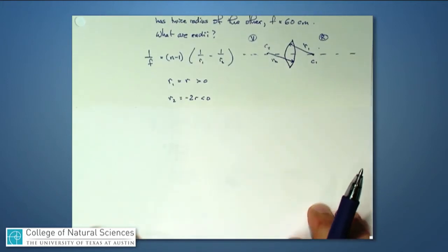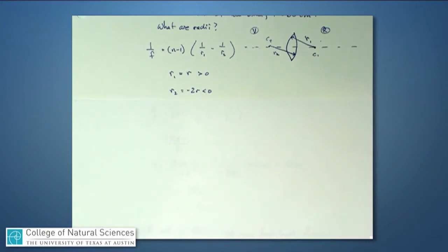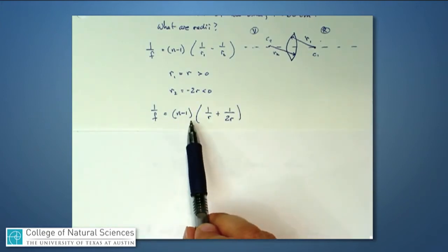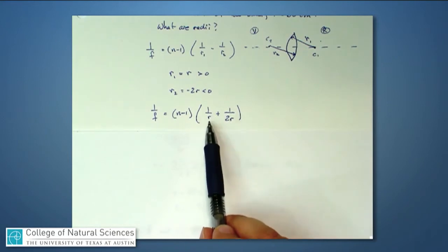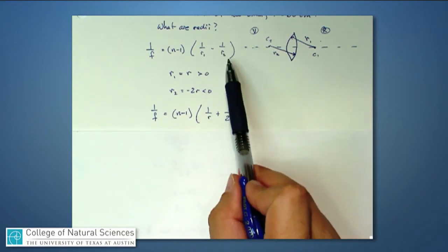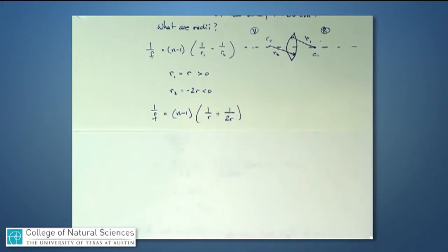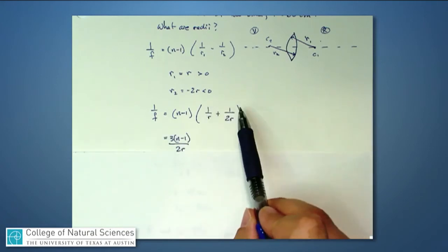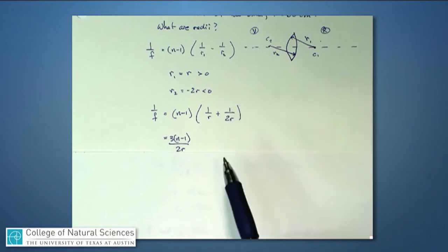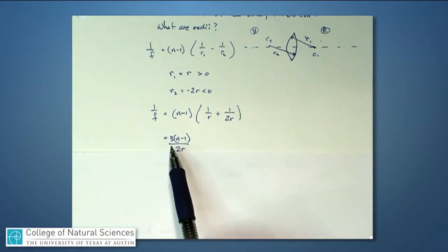Now I put these two things back in my equation for the focal length. I say that one over f is n minus one, one over r, and it should be minus r2, but minus of a minus is positive, and one over two r. Now I'm going to find a common denominator for that expression there. When I do that, that becomes two over two r plus one over two r, so that's three over two r. And I have on the right-hand side three times n minus one over two r.